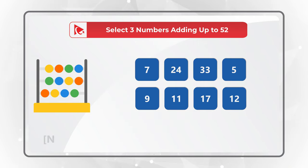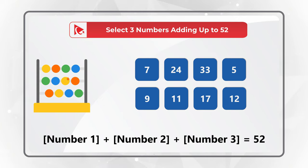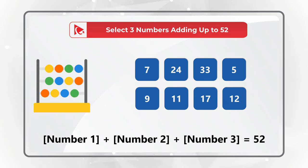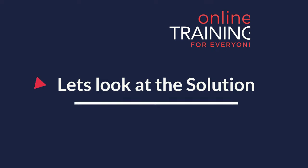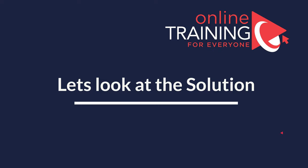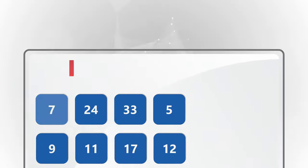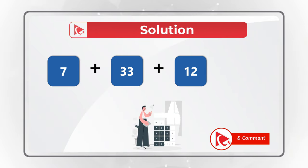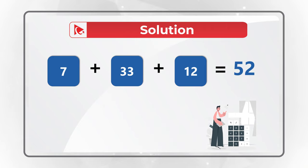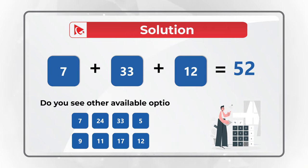Do you see the answer? Give yourself 10 to 15 seconds — pause this video to get to the correct solution. The correct numbers are 7, 33, and 12, because 7 plus 33 plus 12 equals 52. Keep in mind that this may not be the only solution. A lot of times in questions like this, there are other options available.